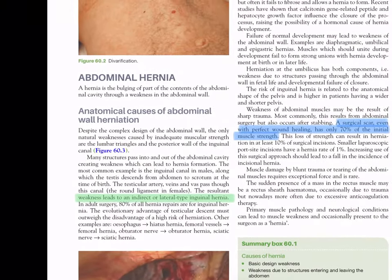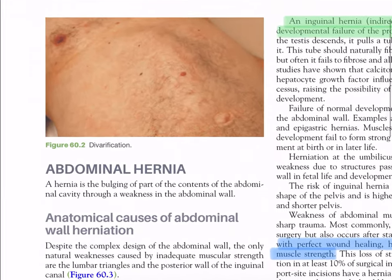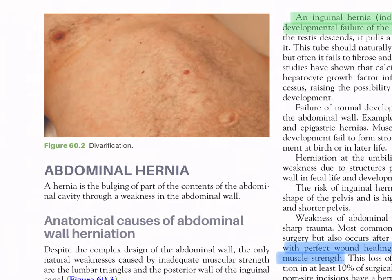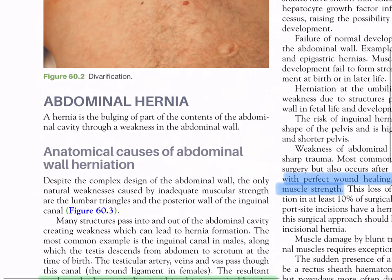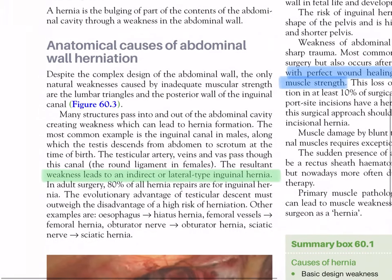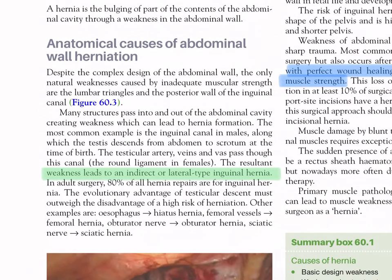Figure 60.2 shows diastasis and hernia through the linea alba. A hernia is a bulging of the contents of the abdominal cavity through a weakness in the abdominal wall. The only natural weaknesses due to inadequate muscular strength are the lumbar triangles and the posterior wall of the inguinal canal.